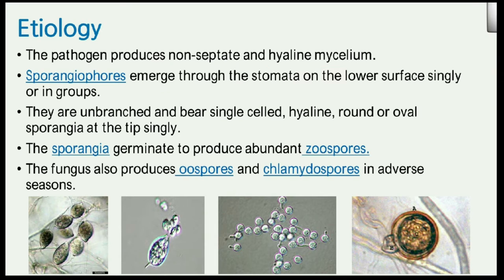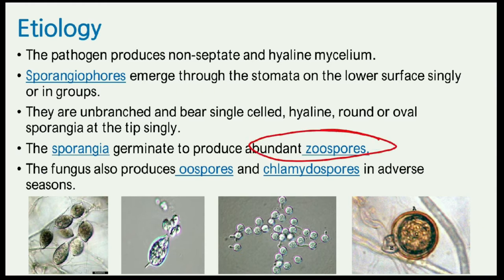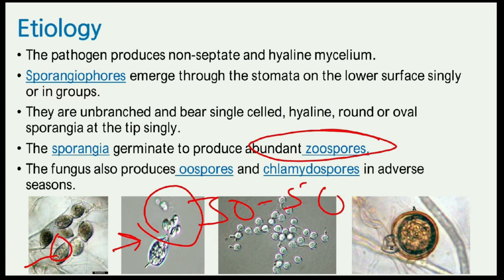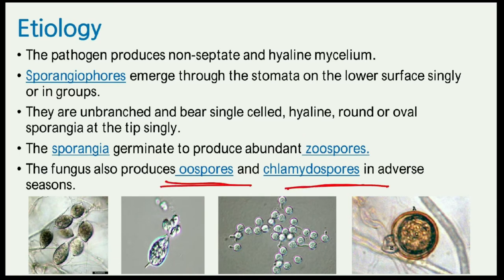Sporangiophores bear single-celled hyaline, round and oval sporangia. When the sporangia rupture, zoospores are released — each sporangium contains 30 to 50 zoospores. Each zoospore will cause individual infection. The fungus also produces oospores (sexual spores) and chlamydospores, which are formed for survival during unfavorable conditions.